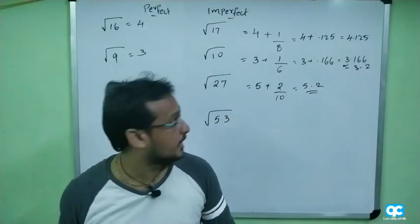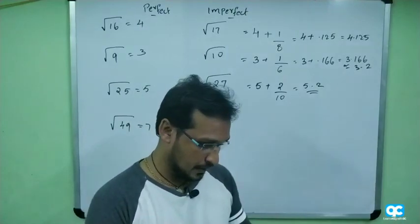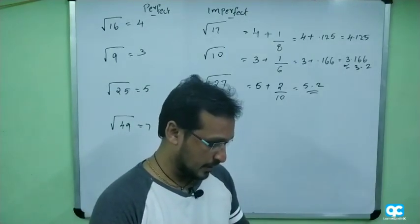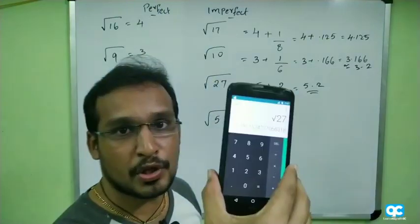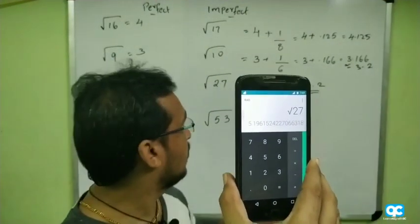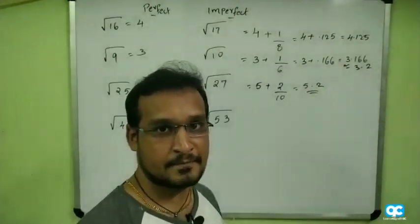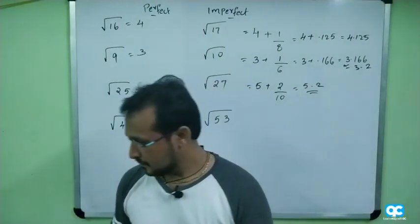For √27, the exact value is 5.196. Using our method we'll get approximately 5.19 or 5.2.